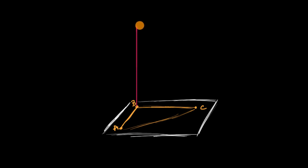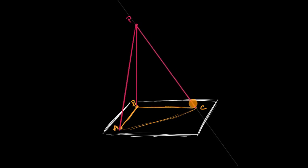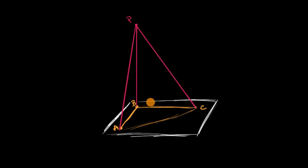So let me just take that point, go straight up, and get to point P right over here. Now what I can do is construct a pyramid using point P as the peak. The length of segment PB is the height of this pyramid.